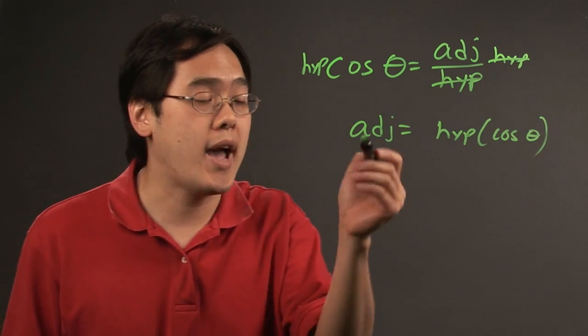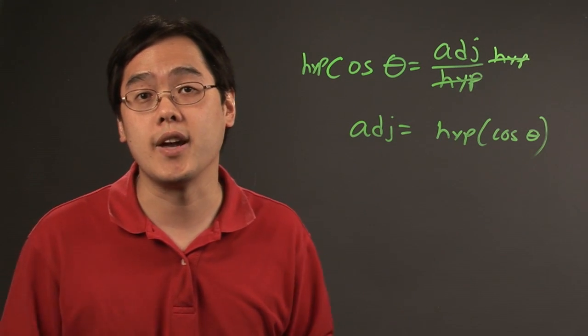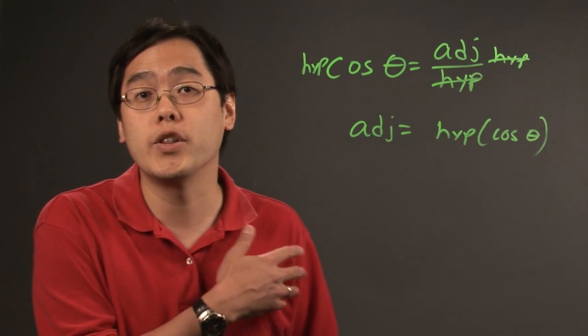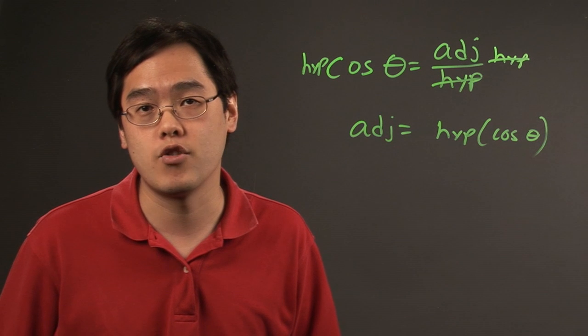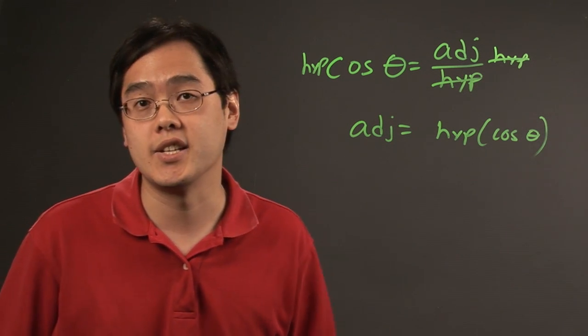Now, the beauty of it is, once you have the adjacent leg, since you're given the hypotenuse, you can find the opposite leg. And therefore, you can find all the other ratios of the right triangle, at least on the sides.